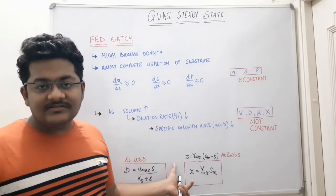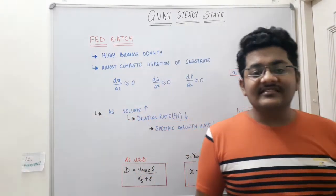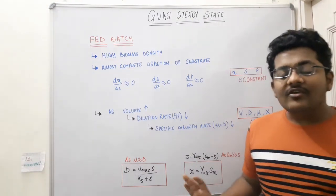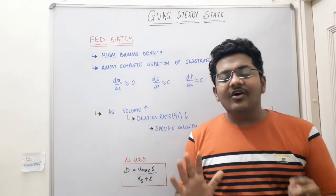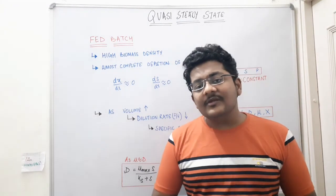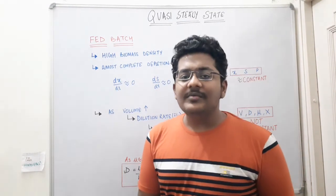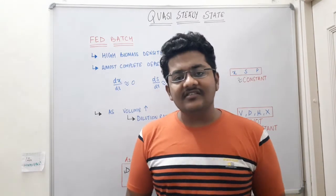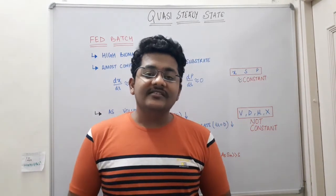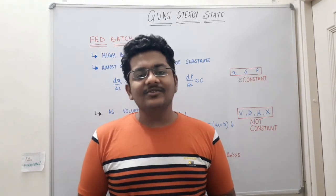If you get any numerical relating to fed batch culture and quasi steady state, you can use both of these formulas — D = mu_max · S / (K_S + S) and X = Y · S_in — to answer all related questions. In the description of this video, there are practice questions from previous year GATE Biotechnology examinations, with answers also provided in the description. Thank you.